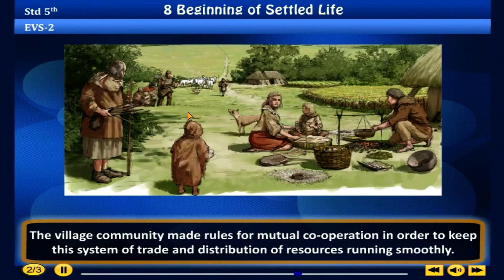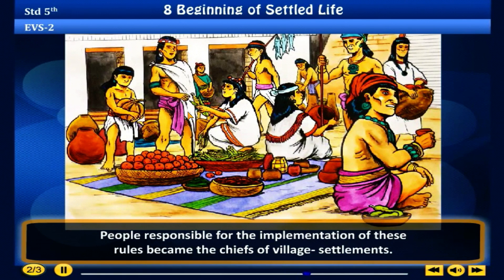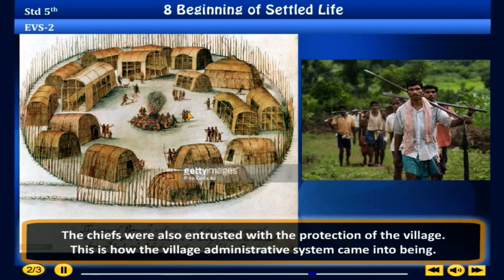The village community made rules for mutual cooperation in order to keep this system of trade and distribution of resources running smoothly. People responsible for the implementation of these rules became the chiefs of village settlements. The chiefs were also entrusted with the protection of the village. This is how the village administrative system came into being.